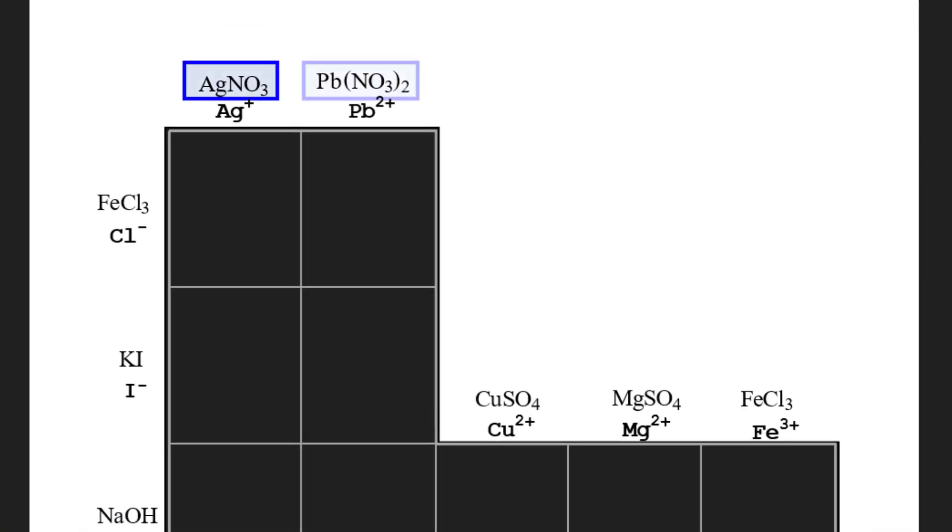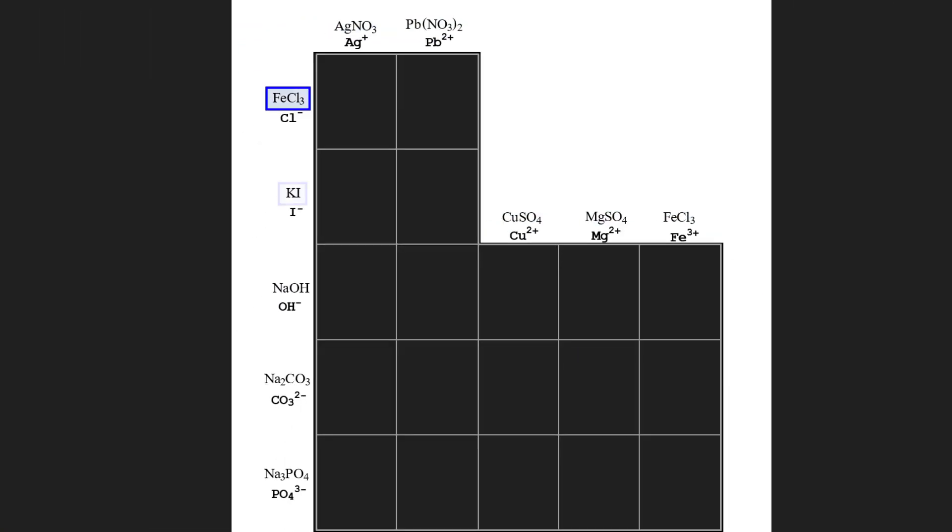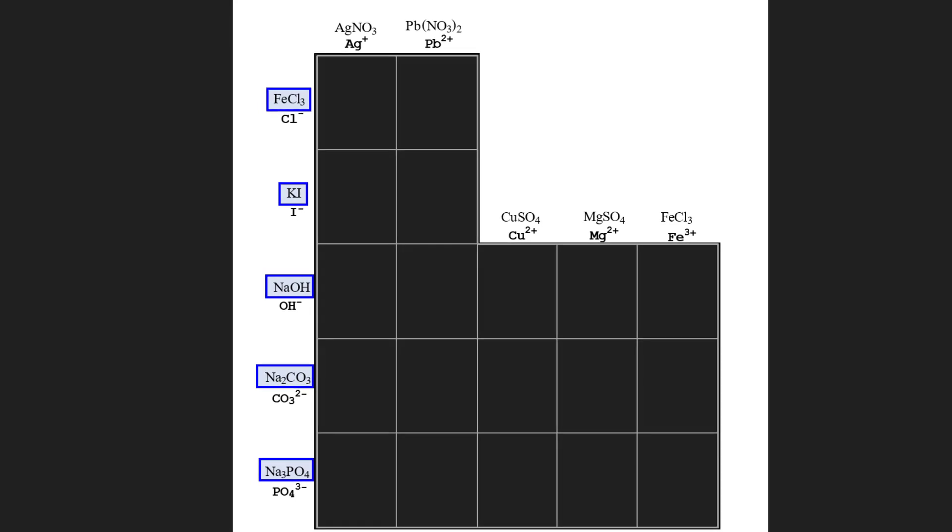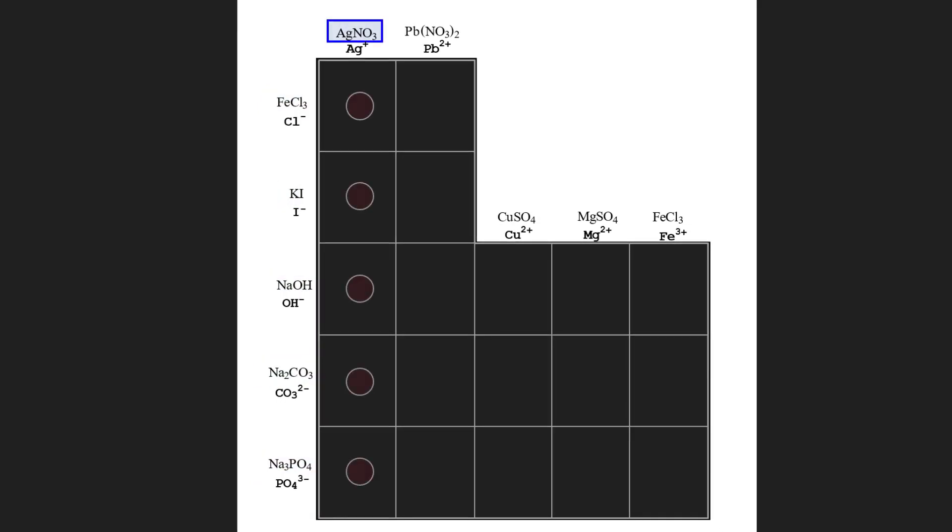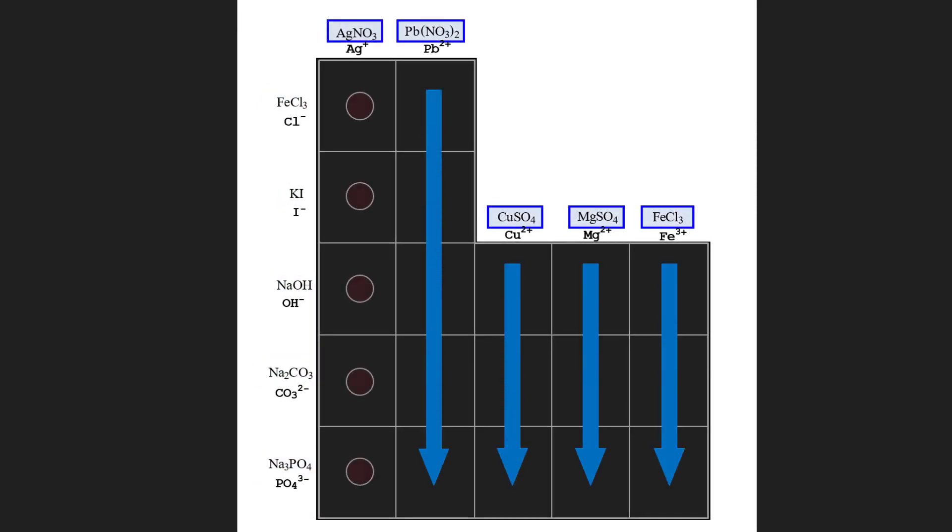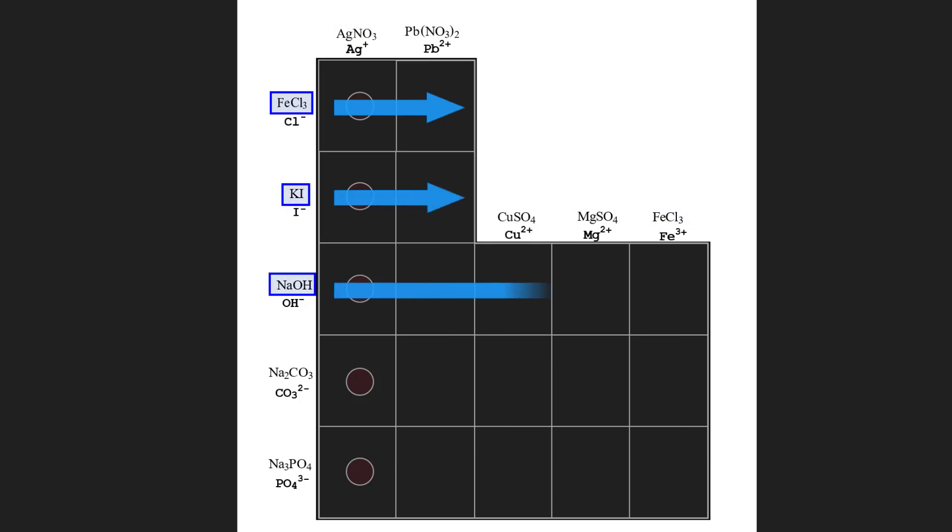The dissolved compounds are written above each column and to the left of each row. A drop of each solution will be put in each column and in each row, producing a precipitate in each box. You will write the correct formula and name of each precipitate by combining the ions written below each compound.